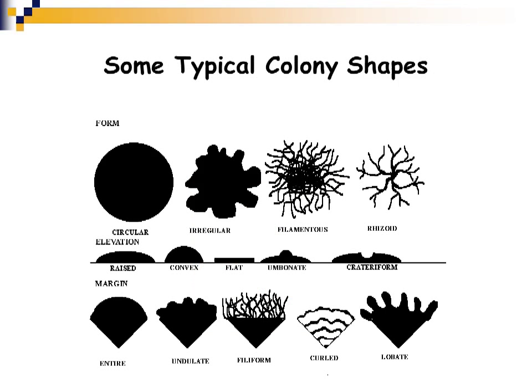Typical colony shapes of bacteria on an agar plate include circular forms, irregularly shaped organisms, and filamentous organisms that look like they have little veins coming out of them. You also have raised colonies, flat colonies, and umbonate colonies with a little bump in the center. Familiarize yourself with these different colony shapes before going into the clinical laboratory.